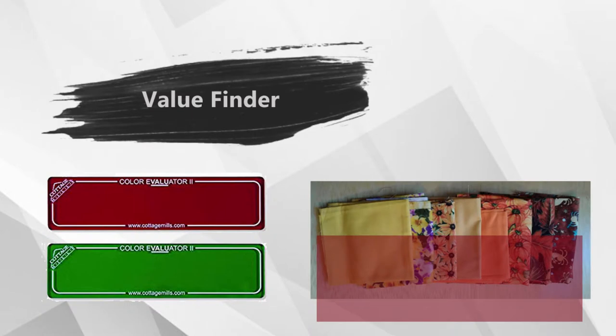Value Finder: The value finder is a red-colored piece of plastic that you can look through at your fabrics to help identify value range. They are also available in green — one is used for warm colors and one for cool colors. This tool can also be called a color evaluator, color tool, or tonal estimator, depending on the brand.